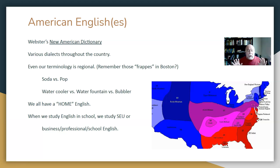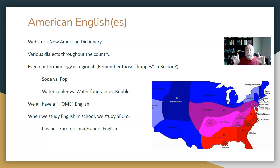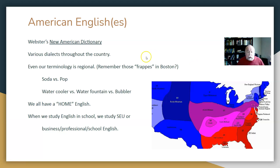The bottom line is that we all have a 'home English' — a version of English we speak at home, that our family uses, that we grew up speaking. That's part of our identity; there's nothing wrong with it, nothing to be ashamed of. But there's a standardized version of the language used in school, in business, in government, and in international dealings. That standardized, fixed version exists so that people in one country speaking English can understand people in another country speaking English. It's designed to perpetuate understanding, commerce, and diplomacy.